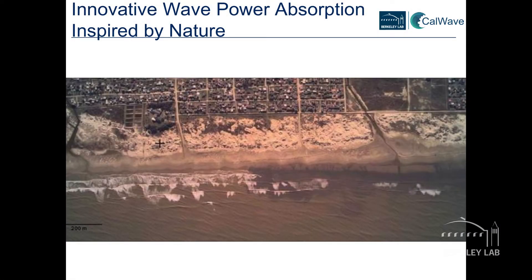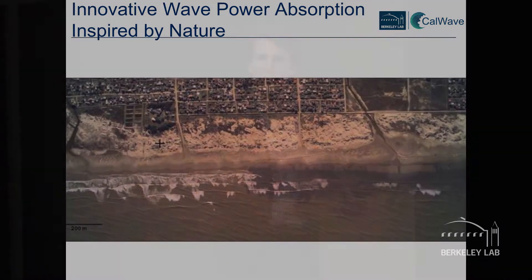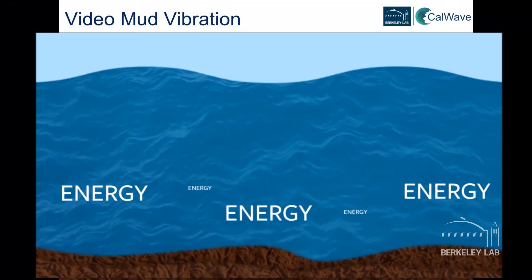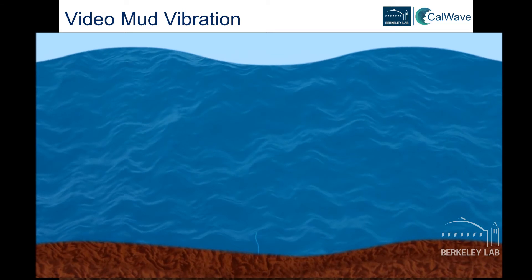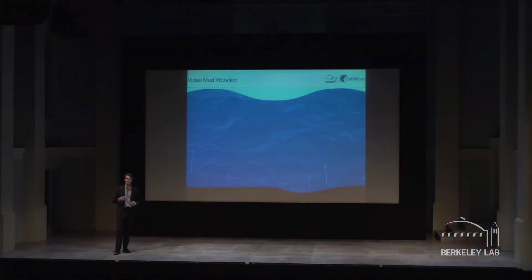Sometimes when engineers struggle and can't find a solution, we step back and find inspiration in nature. That was the case with our technology. Here we can see a very special place in the Gulf of Mexico. On the left side, big groundswells travel to the coastline till they break and completely vanish. On the right side, suddenly all the waves disappear. This place has been known by fishermen and is called the mud hole. There is a certain mud floor at this location, and as the waves travel over this mud, the mud starts to vibrate — then this vibration, similar to a shock absorber in a car, extracts all the energy.